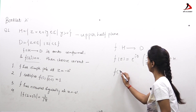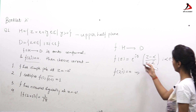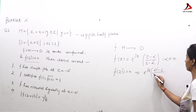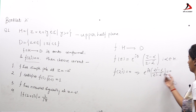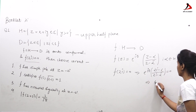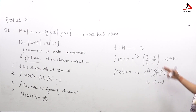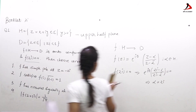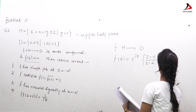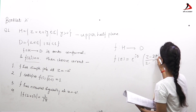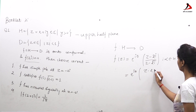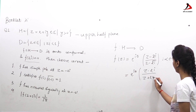Substituting into the formula: e^(iθ) · (2i − α)/(2i − ᾱ) = 0. Since the exponential factor is nonzero, the numerator must be zero, giving α = 2i. So the specific function is f(z) = e^(iθ) · (z − 2i)/(z + 2i), since ᾱ = −2i (complex conjugate of 2i).